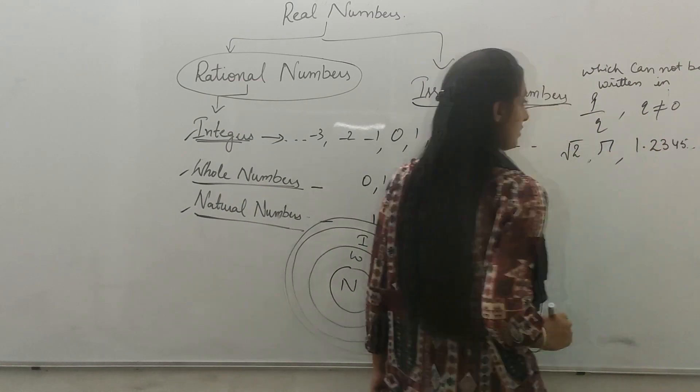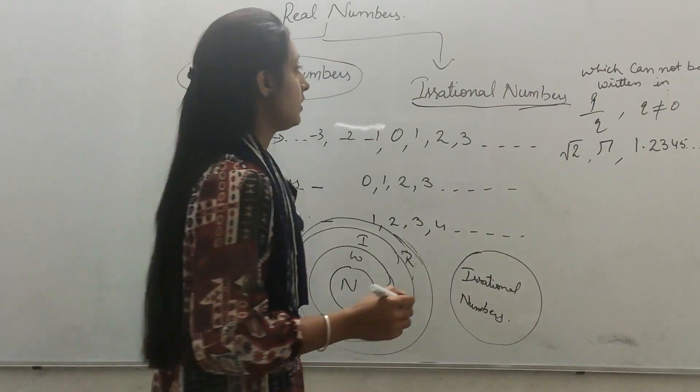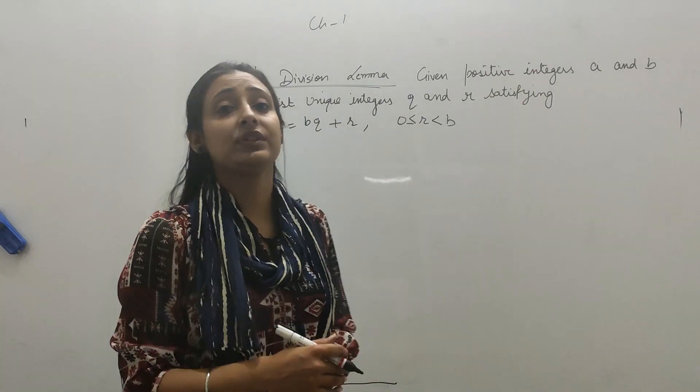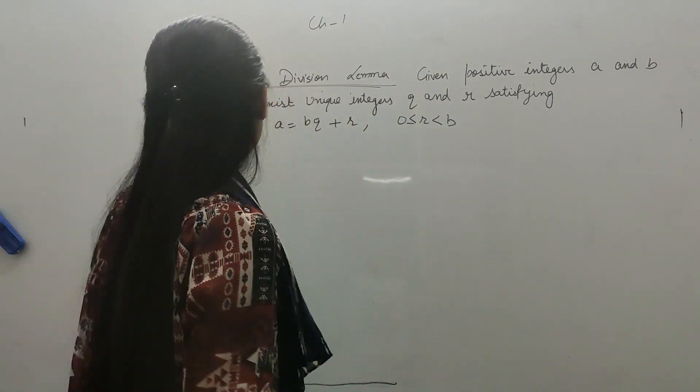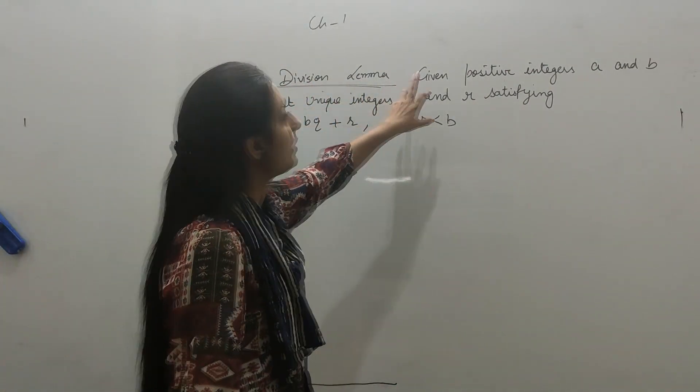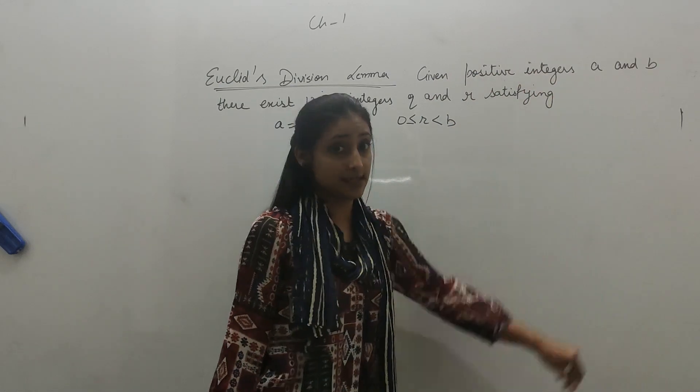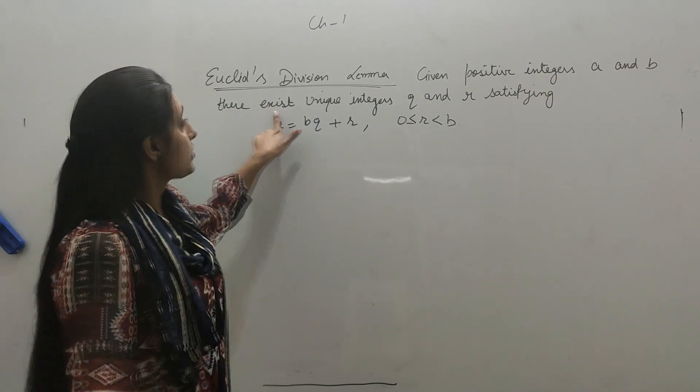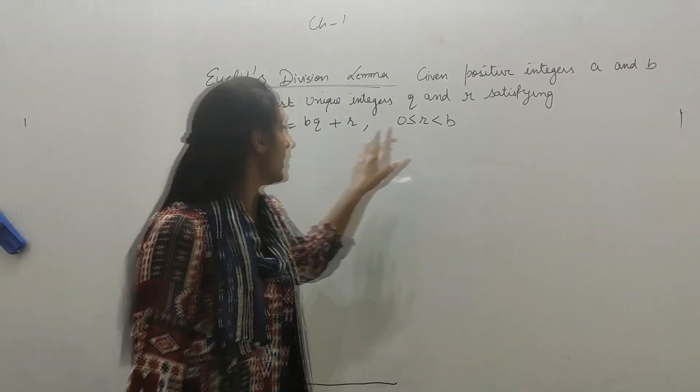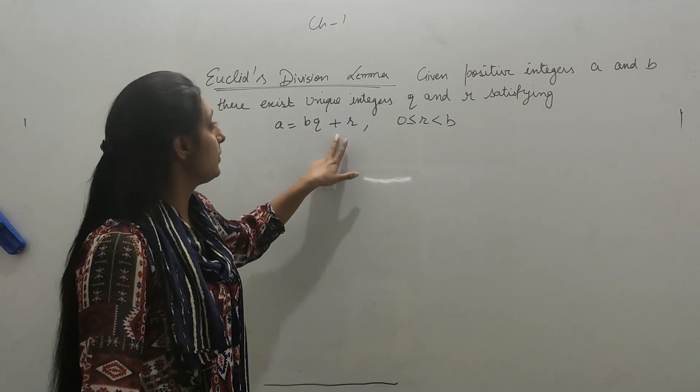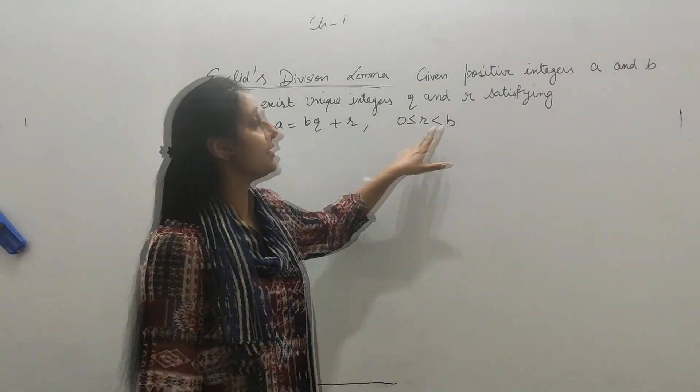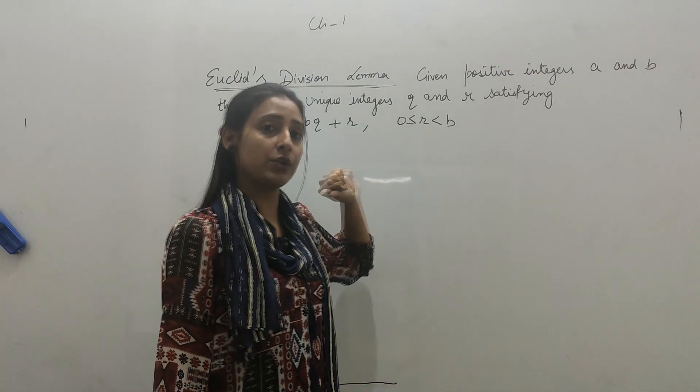Now I will tell you about the Euclid's Division Lemma. What is the Euclid's Division Lemma? That is, given positive integers A and B, there is a unique integers Q and R satisfying A equal to BQ plus R, where R is less than B but greater than or equal to zero.